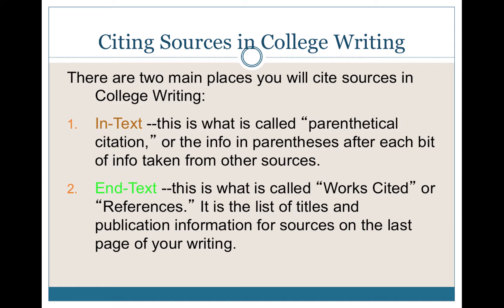The key thing to know is that you always need both — you can't have one without the other. An in-text citation by itself references a source whose title and publication information you don't have, so you can't find it. A works cited entry at the end notes that you included a source, but without in-text citations, you don't know where it's been included. They work together.